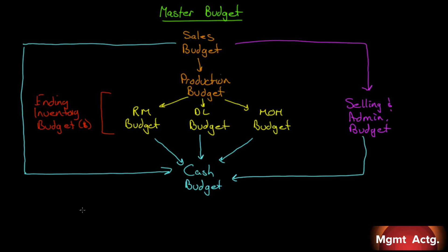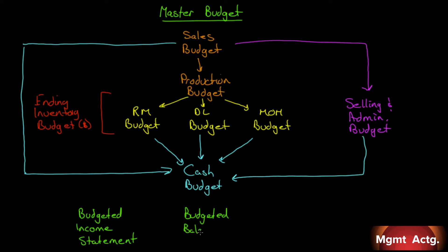All that's left is the budgeted income statement, which is driven from the sales budget and all of our cost budgets, and the budgeted balance sheet. As we go through each of these budgets, especially with the cash budget, we will fill in most of the lines for the balance sheet and the income statement automatically. They're done just as a matter of fact of doing the rest of the budgets. Each budget that we do fills in some line in the income statement or the budgeted balance sheet.